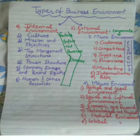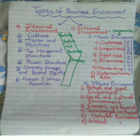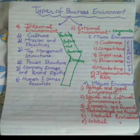We will continue from types of business environment. There are two types of business environment: internal and external. In internal, we will study culture, mission and objective, top management structure, power structure, company image and brand equity, and the last one is human and other resource.